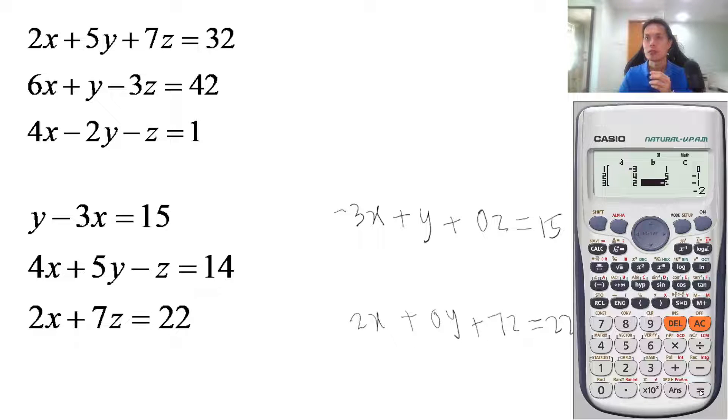Okay, third equation you have two x. B, you have zero y, so you put zero equals, and the c is seven, so you put seven equals, and lastly your d is 22, press 22 equals.